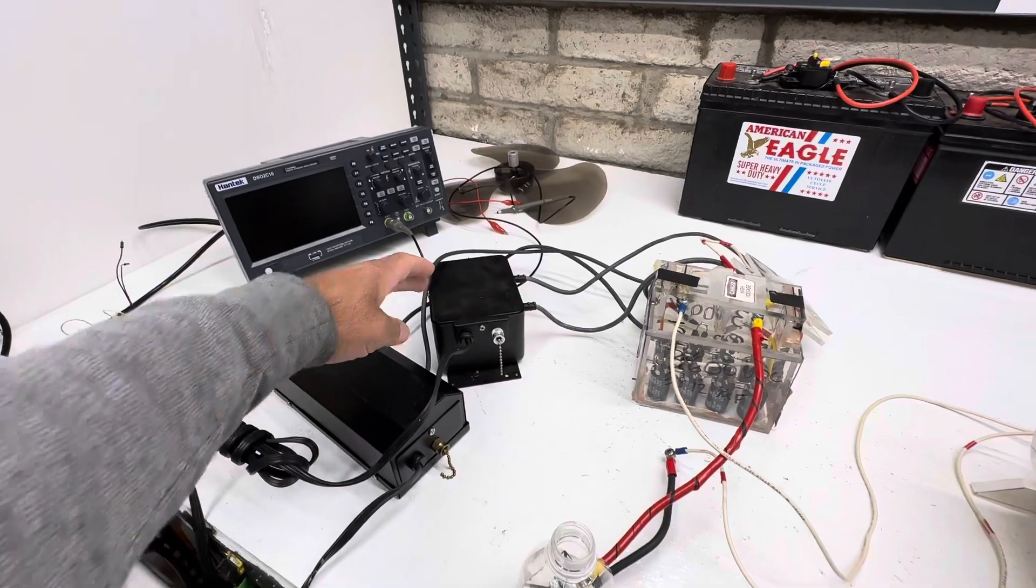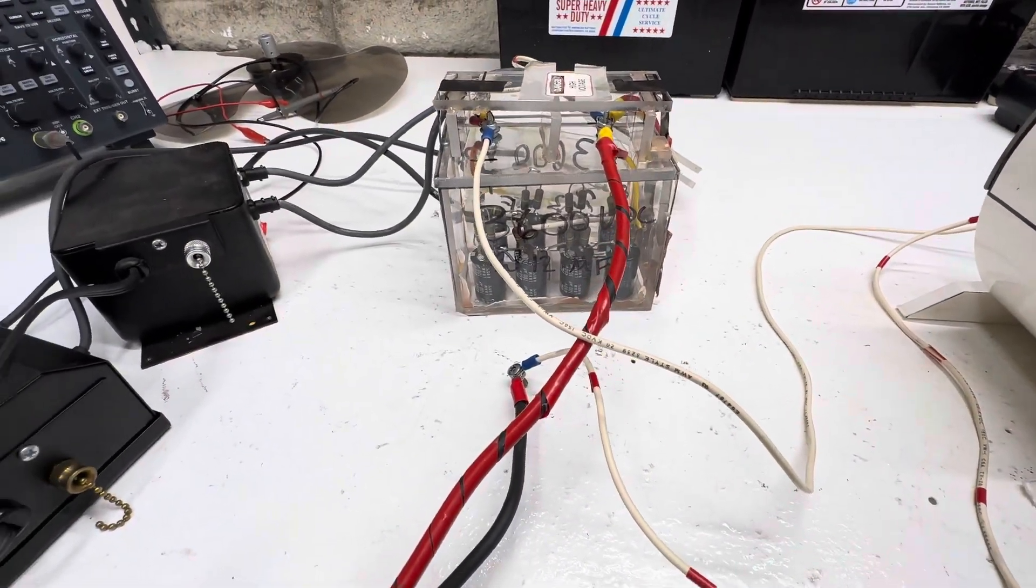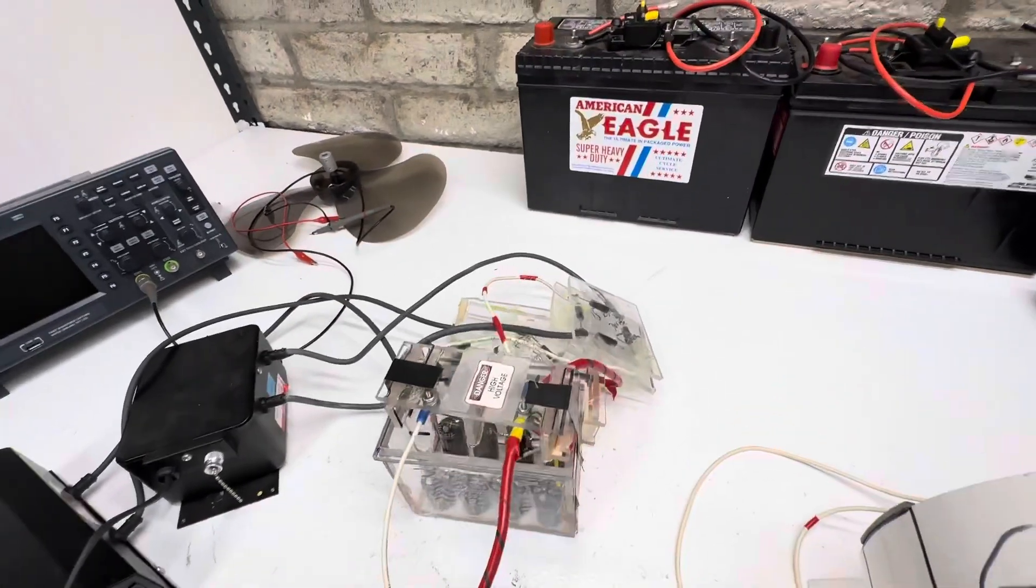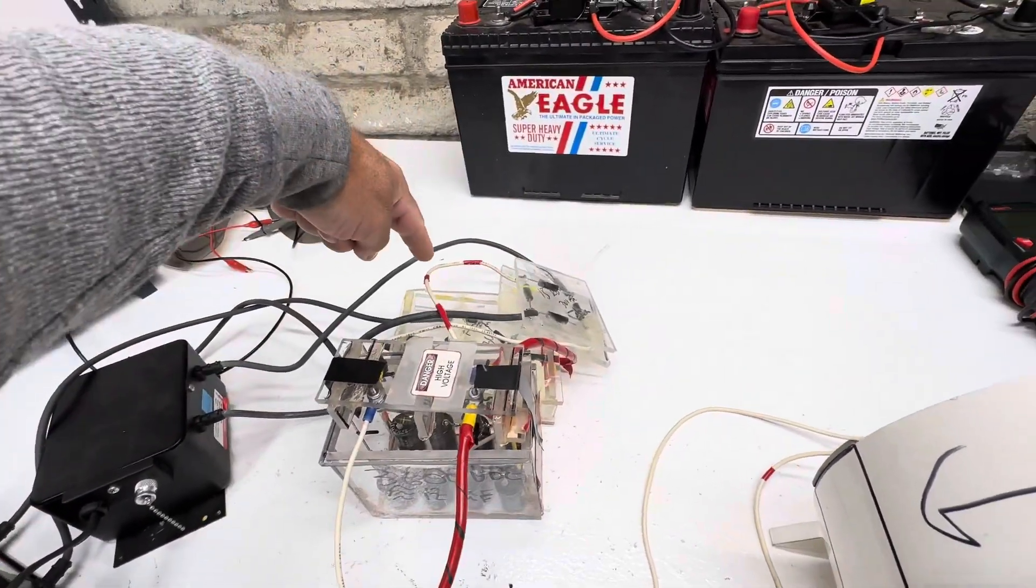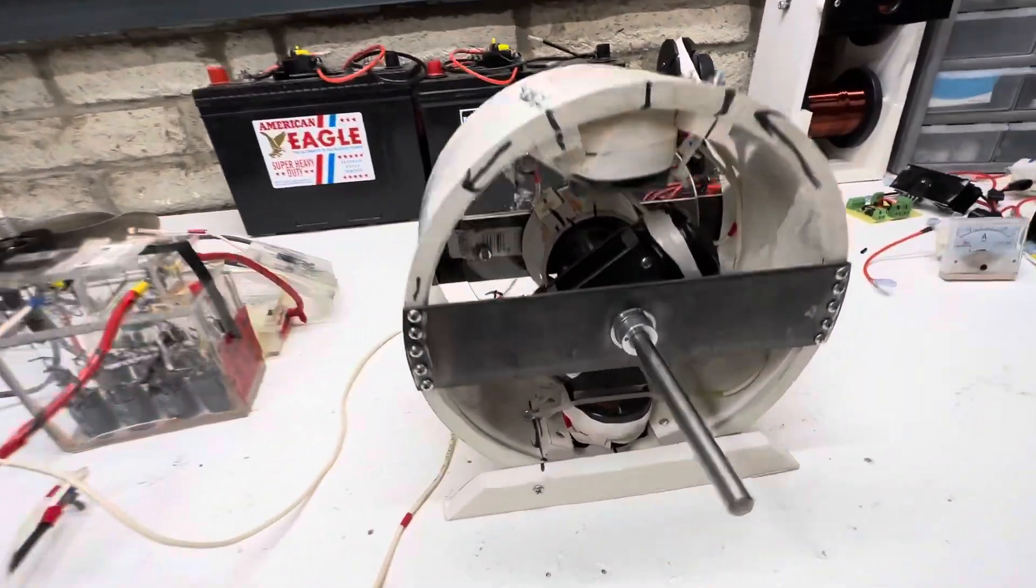It has two 5000-volt transformers. First, it goes through the rectifiers, then to the capacitor bank, then to the spark gap, and then deep inside.